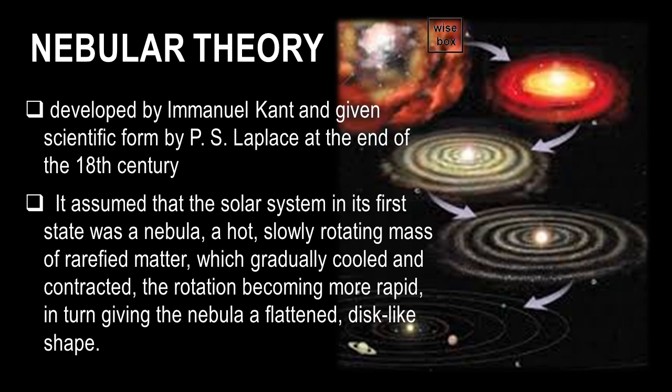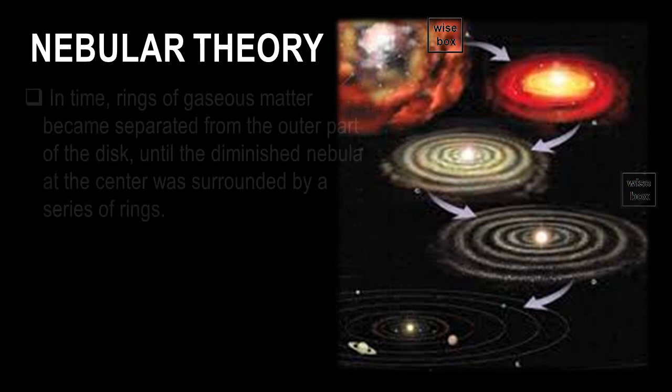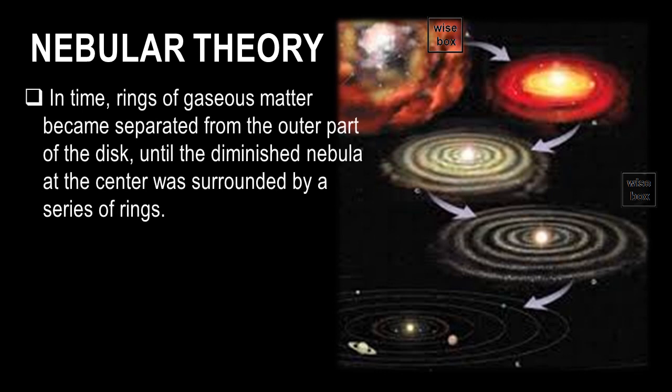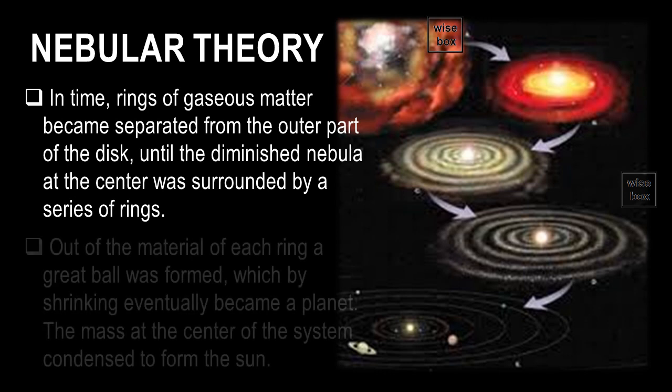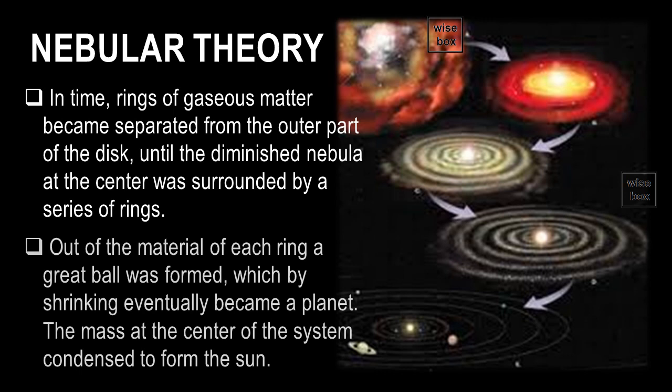The rotation becoming more rapid, in turn giving the nebula a flattened, disc-like shape. In time, rings of gaseous matter became separated from the outer part of the disc, until the diminished nebula at the center was surrounded by a series of rings. Out of the material of each ring, a great ball was formed, which by shrinking eventually became a planet. The mass at the center of the system condensed to form the Sun.